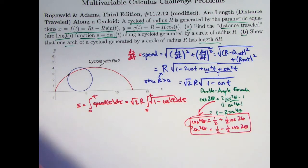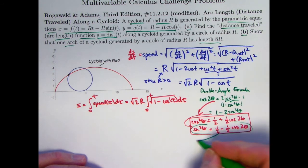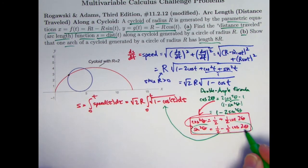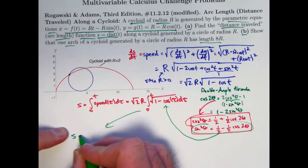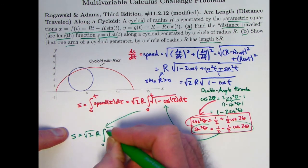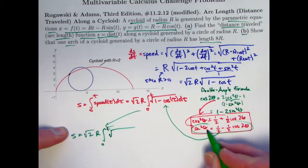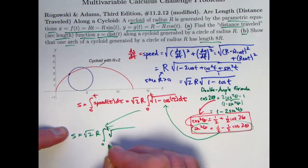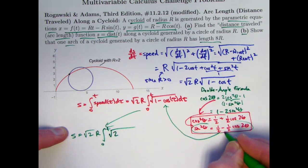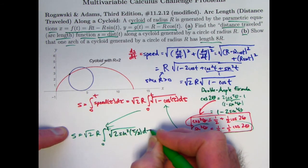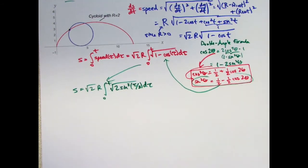I can use the identity for sine squared here. Essentially I take the equation for sine squared θ, multiply both sides by 2, and replace θ with τ/2. What I get is: s equals square root of 2 times r, times the integral from 0 to t of the square root of 2 sine squared (τ/2) dτ. Now we're going to take the square root of a square — technically in general that's the absolute value — so factoring out the square root of 2, I get 2r times the integral from 0 to t of the absolute value of sine(τ/2).